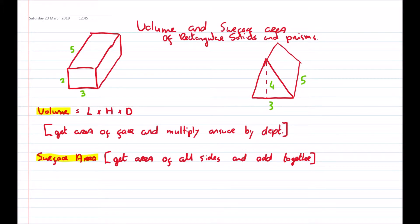In this video, we're going to look at finding the volume and the surface area of rectangular solids and prisms. So, rectangular solids, like a brick or a Toblerone or things like that. So these objects are 3D.